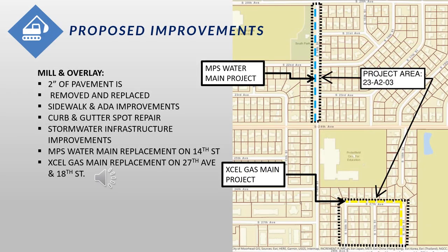The proposed street improvements for this project will be a mill and overlay. This will include removing and replacing a couple inches of pavement on the existing road. We will also do minor updates to the sidewalk and ADA ramps as needed, and make minor improvements to the storm sewer by installing new castings and grates. Moorhead Public Service will be replacing the water main on 14th Street, shown as the blue dotted line, under a separate contract in advance of our street improvement project. In addition, Xcel Energy will be replacing their gas mains on 18th Street and 27th Avenue South, also under a separate contract to be completed ahead of the city's project.